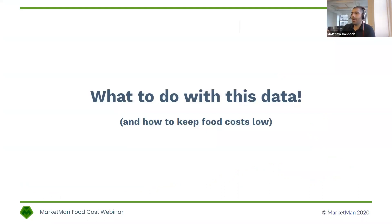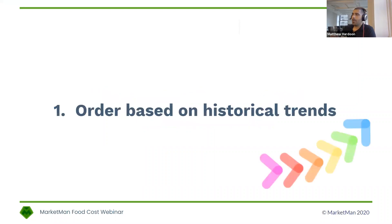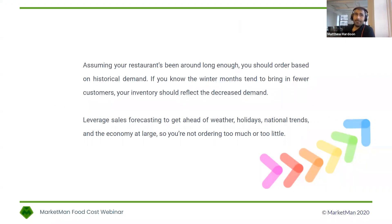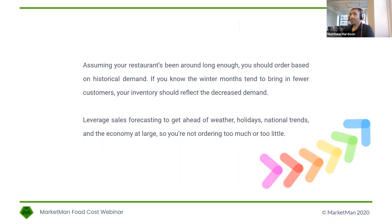So let's talk about what we do with this data and how we keep food costs low. Number one: order based on historical trends. As we're shifting from summer to autumn, we want to make sure we're ordering based on what meets historical demand. If there are different seasonal items you want to put on the menu, different locally sourced ingredients, or different popular alcoholic offerings like seasonal beers, take a look at previous reports and get a better understanding of what's popular and what needs to be ordered.